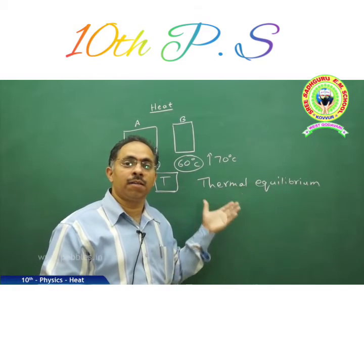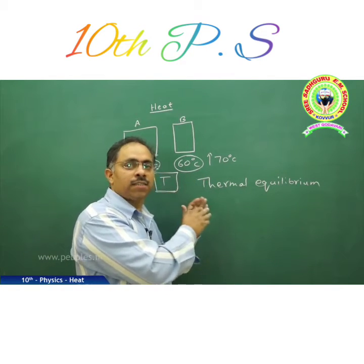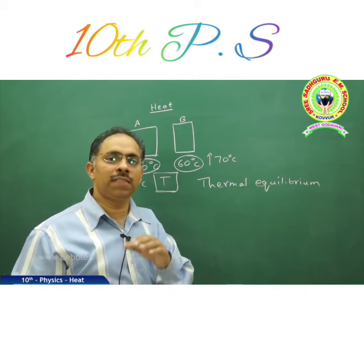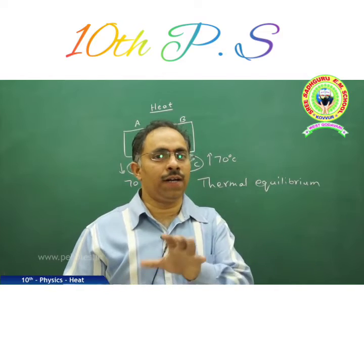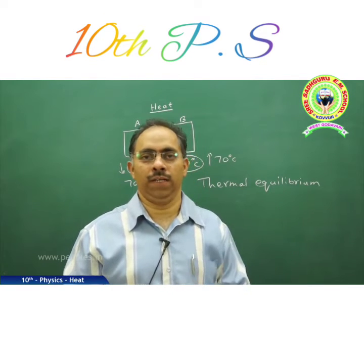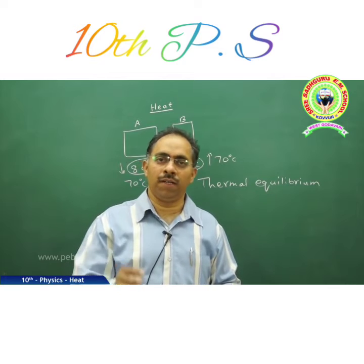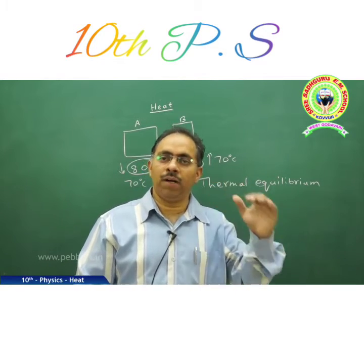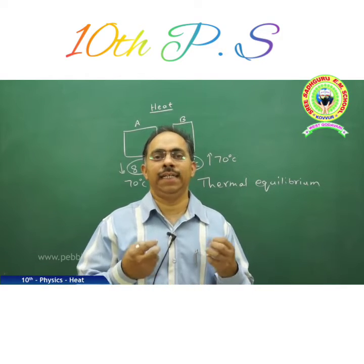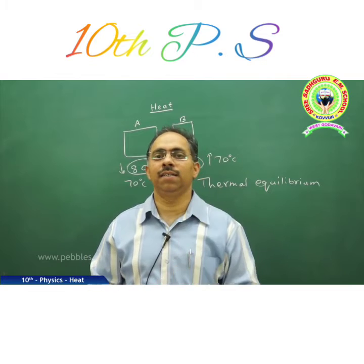How does this state of thermal equilibrium help us? The condition of thermal equilibrium helps us study how much heat is lost by one body and how much heat is gained by another body. We are trying to measure the amount of heat lost by a hot body or gained by a cold body. The body at lower temperature gains heat; the body at higher temperature loses heat. To know how much heat, we need to measure it.